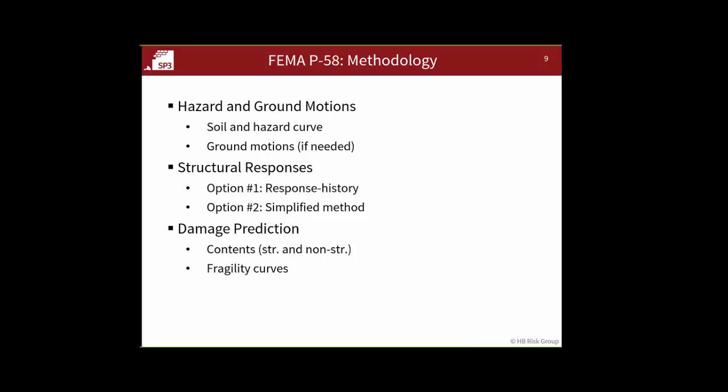The next step is damage prediction. The basic point is: if I know my drift is a certain amount, what's the related damage to each component that's drift sensitive? If I know my peak floor acceleration is 0.8g, what's my expected damage to equipment up on the roof? There are really two parts to this step — the first is content. You have to estimate or know what's in your building, which sounds obvious but is non-trivial if you manually input everything.